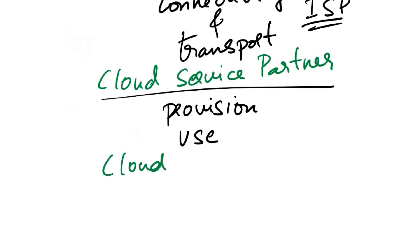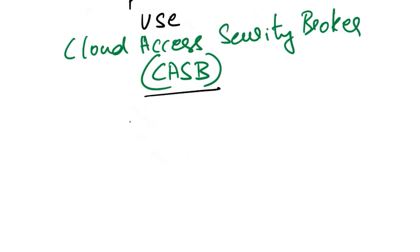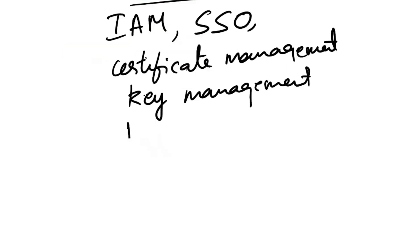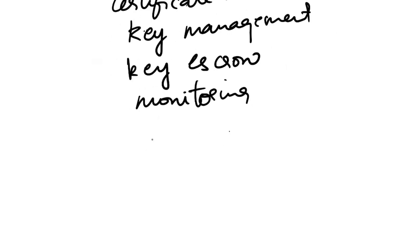Next role is cloud access security broker, CASB. CASBs are third-party providers that provide IAM services — identity and access management services — single sign-on (SSO), certificate management, key management services, cryptographic key escrow, and monitoring services for customers. They also provide centralized cloud policy enforcement.